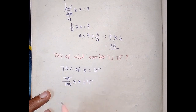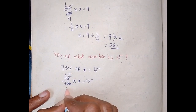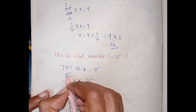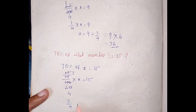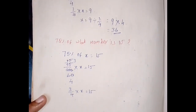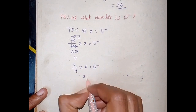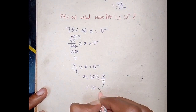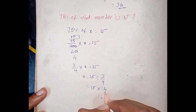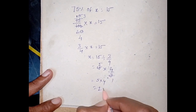After cancellation: 5 cancels with 5, giving 1 by 5; 75 becomes 15; 100 becomes 20. So 3 by 4 into x is equal to 15. Transposing 3 by 4 to the right-hand side, x equals 15 divided by 3 by 4, which equals 15 multiplied by 4 by 3 (reciprocal). Cancellation gives 5 into 4 equals 20. This is the answer.